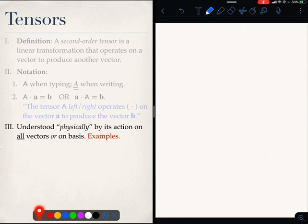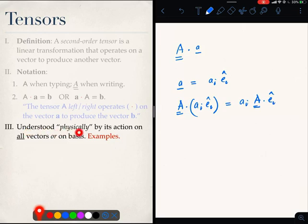Now here is one more thing. We have been operating the tensor on vectors. What we know is that every vector can be expressed as a linear combination of unit vectors. So now let us operate A on a_i e_i, and what do we see? Because it is a linear operation, so I can write this as: a_i times A dot e_i. So that is what I mean by over here, that it is understood physically by its action on either all vectors or simply on the basis, because I now need only information of this and I can understand what it does to all vectors.